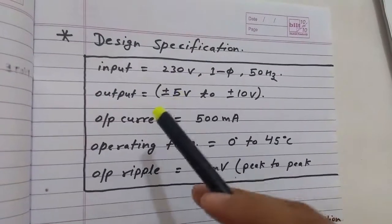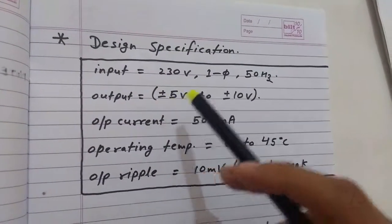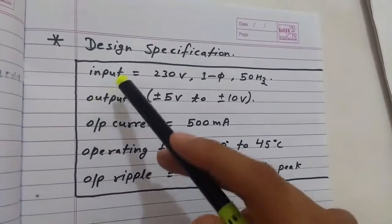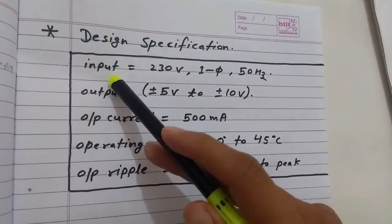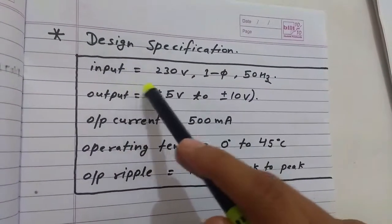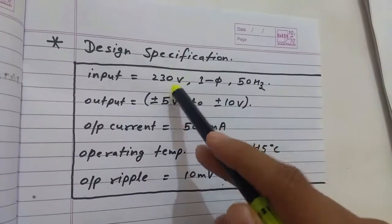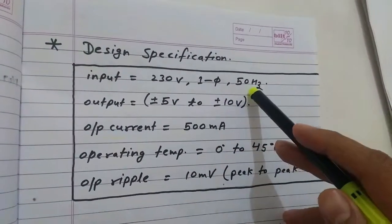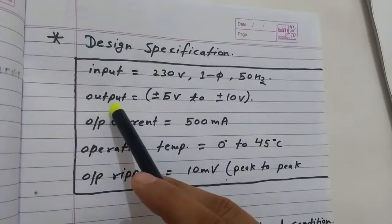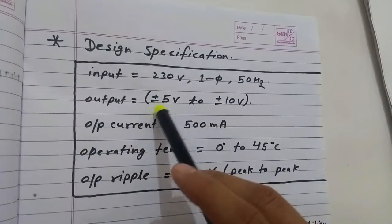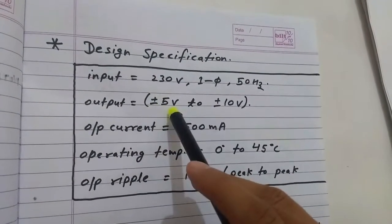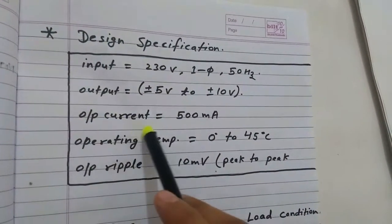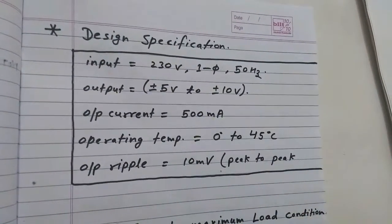Let's take the sample design to design the variable mode dual tracking power supply. First, the input is from mains: 230 V RMS, single phase, 50 Hz. The output of this dual tracking mode is ±5 V to ±10 V variable, and the load current should be 500 mA.